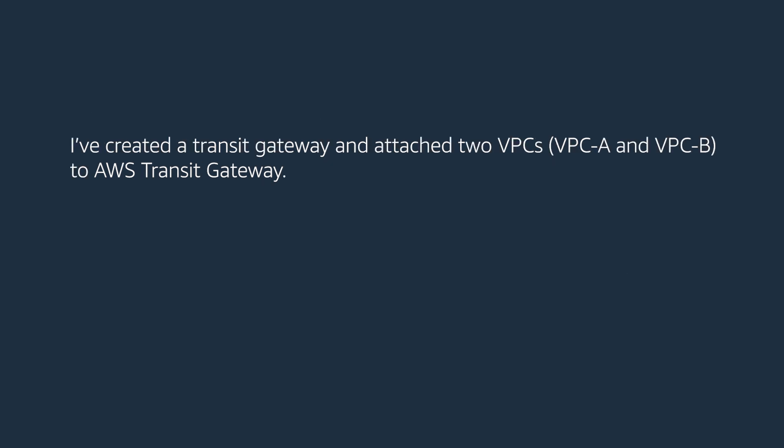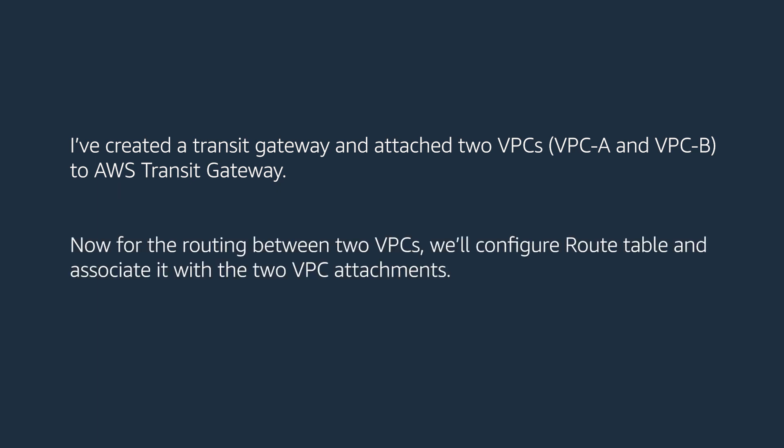I've created a Transit Gateway and attached two VPCs, VPC-A and VPC-B, to AWS Transit Gateway. Now for the routing between the two VPCs, we'll configure the route table and associate it with the two VPC attachments. Let me show you how.